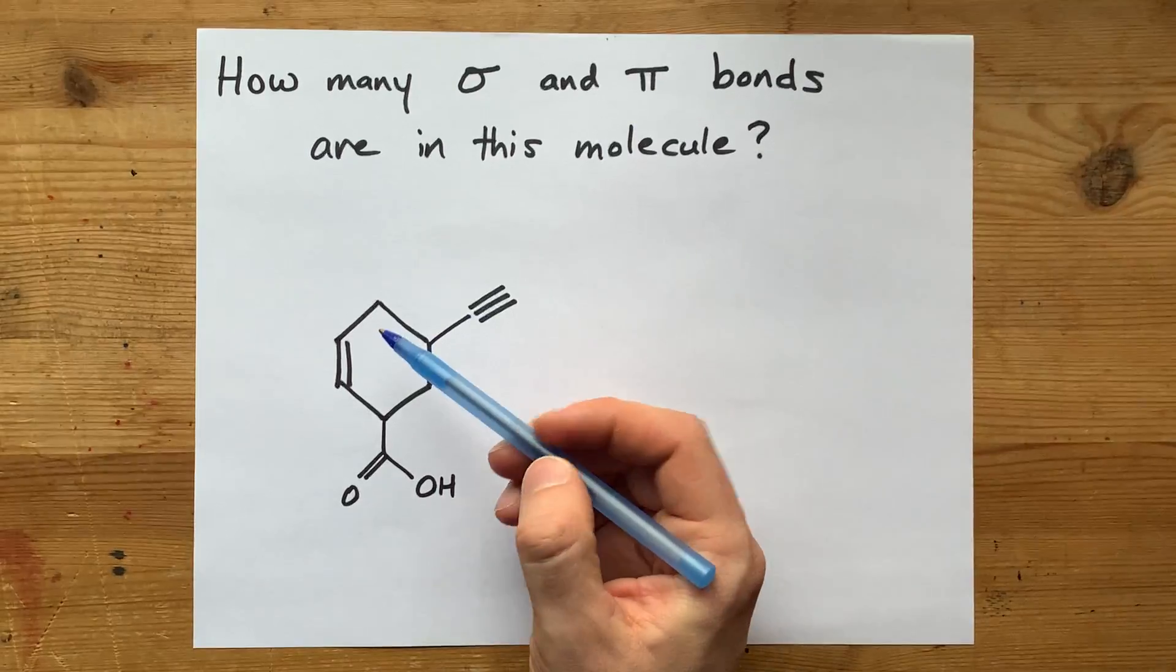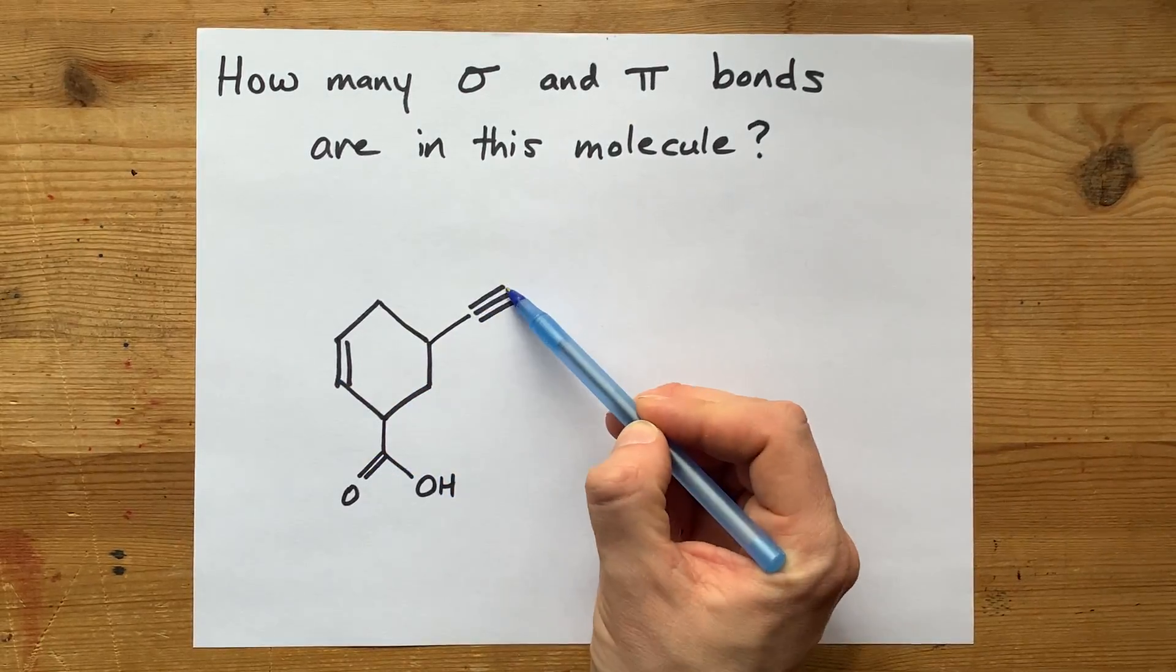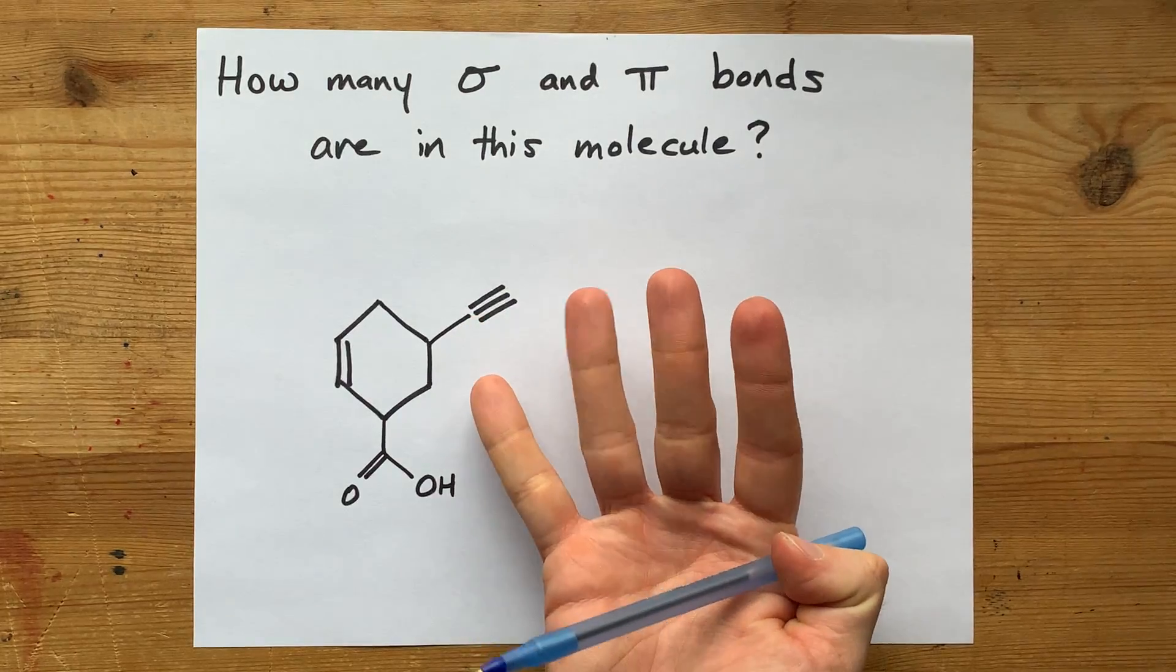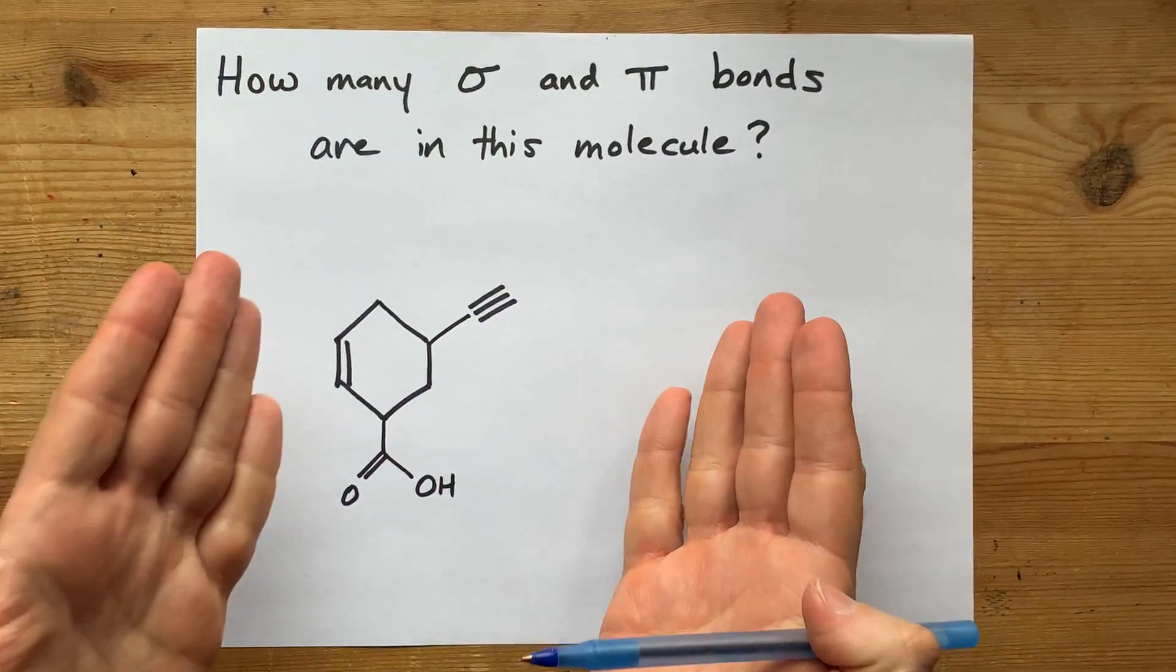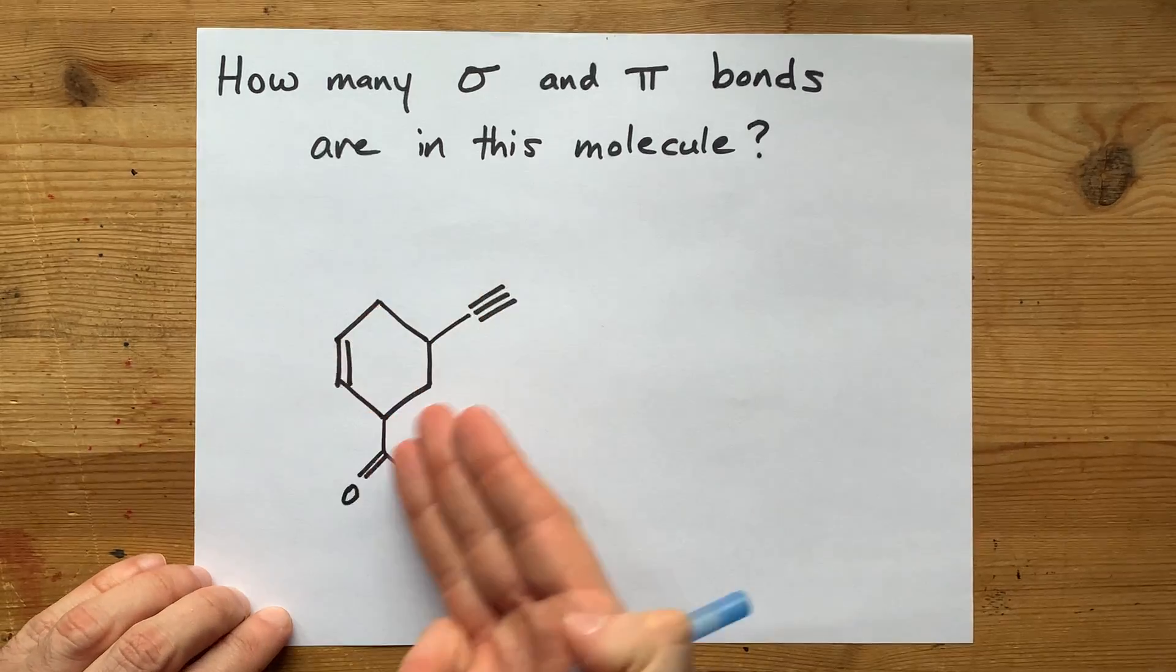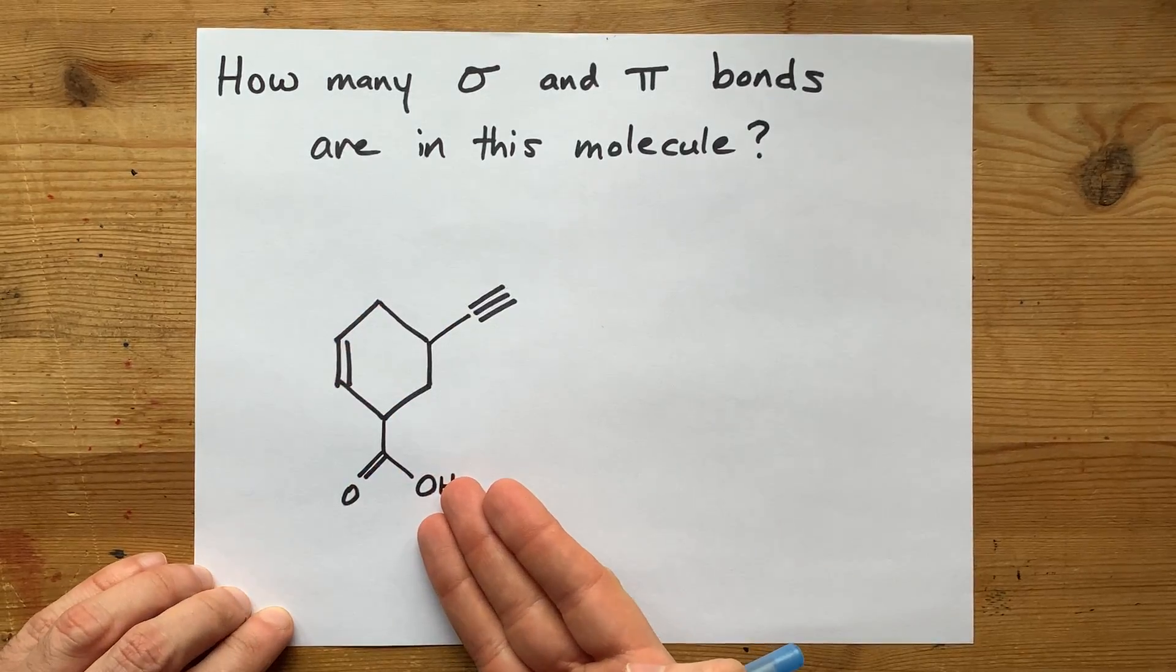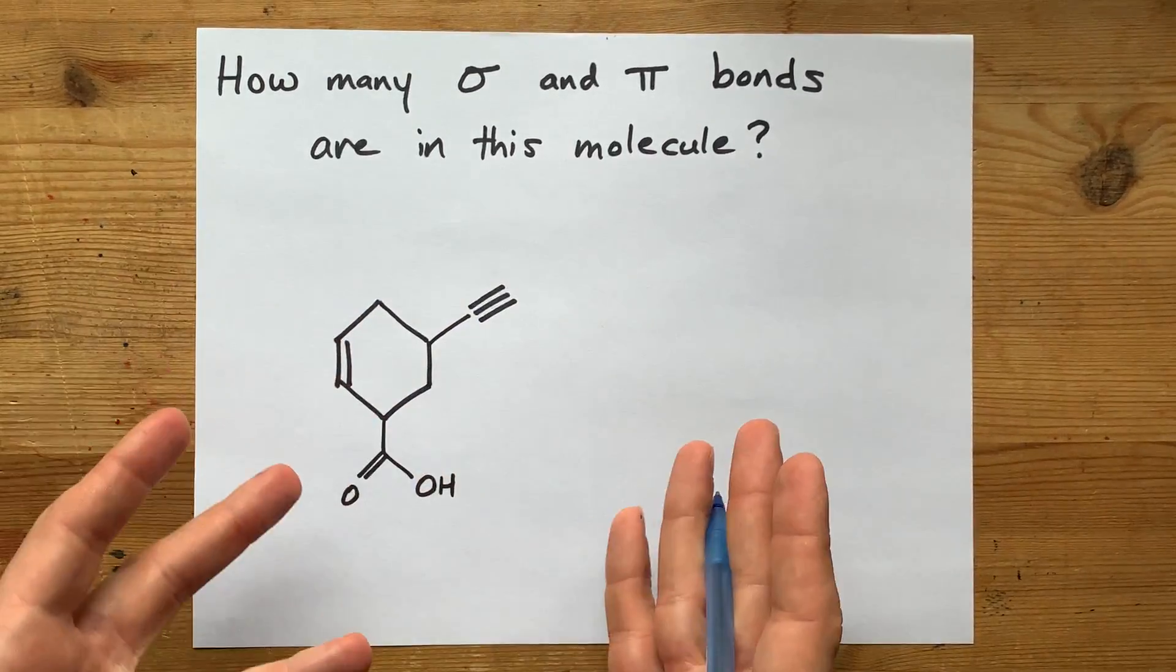A quick glance here shows me a pi bond here, a pi bond here, and two pi bonds here. That makes four. But counting sigmas can be more difficult, especially with a condensed structural diagram, because hydrogens aren't shown.